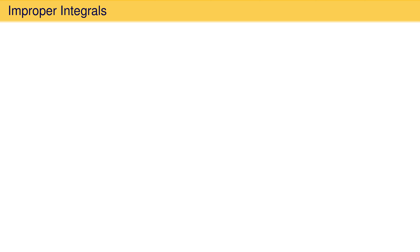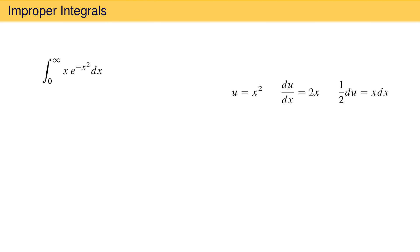Evaluating an improper integral is similar except that a limit must be used whenever infinity is involved. Consider the integral from 0 to infinity of x times e to the minus x squared dx. Using substitution with u equal to x squared, we get du equals 2x dx, so x dx equals 1 half du. Rewriting gives 1 half times the integral from 0 to infinity of e to the minus u du, which evaluates to minus 1 half e to the minus u evaluated from 0 to infinity.